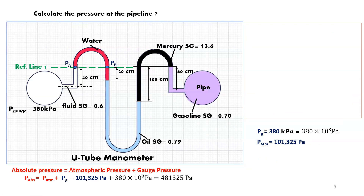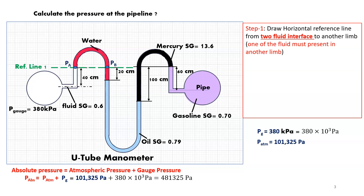First, we draw the horizontal reference line from the two-fluid interface to another limb. This is reference line one. One fluid has specific gravity 0.6 and the other is water. The horizontal line starts from the fluid interface and extends to the other limb, where water is present. That gives us reference line one.